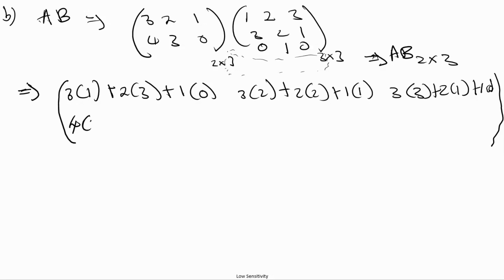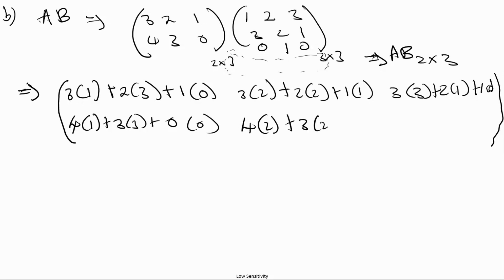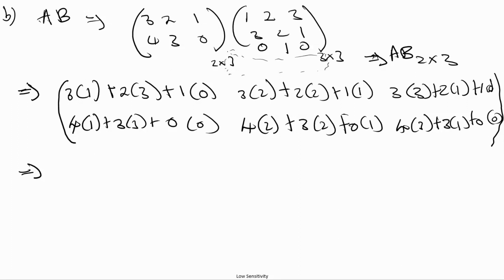For the second row: the first entry is 4×1 + 3×3 + 0×0; the second entry is 4×2 + 3×2 + 0×1; and the third entry is 4×3 + 3×1 + 0×0.